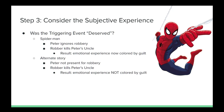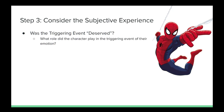Regardless of what kind of situation you are working with, take some time to consider what role the character played in setting up the triggering event for their emotion. Did they directly influence it? Or did they have nothing to do with it? Did anyone have any influence at all in how things turned out? Take your time to consider this, and then write a few sentences to describe what role the character played in setting up their own triggering event and how that role colors their experience of the emotion.